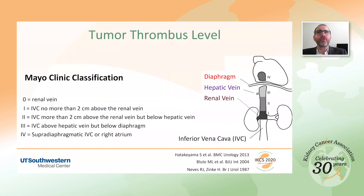Because this information is also used to plan surgery, an alternative approach known as the Mayo Clinic classification is also widely used. This classification defines level 0 as thrombus limited to the renal vein; level 1 as thrombus in the IVC but no more than 2 cm above the renal vein ostium; level 2 as thrombus in the IVC more than 2 cm above the renal vein but below the hepatic veins; level 3 as thrombus above the hepatic veins but below the diaphragm; and level 4 as tumor above the diaphragm, including those entering the right atrium.